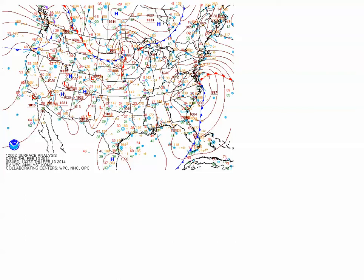This is a surface analysis from 12Z on February 13, 2014. There was a 997 millibar low-pressure system along the East Coast right along the North Carolina-Virginia border. This was a fairly significant storm which dropped over two feet of snow in parts of the mid-Atlantic region. Heavy snow extended up into New England with localized blizzard conditions.